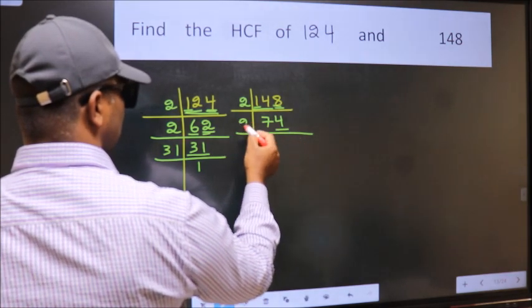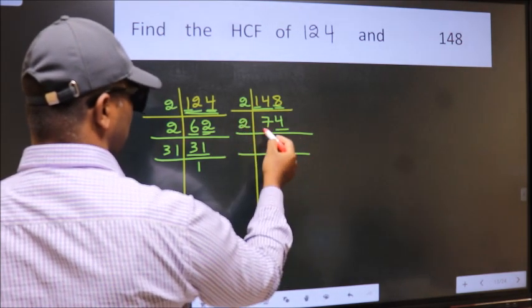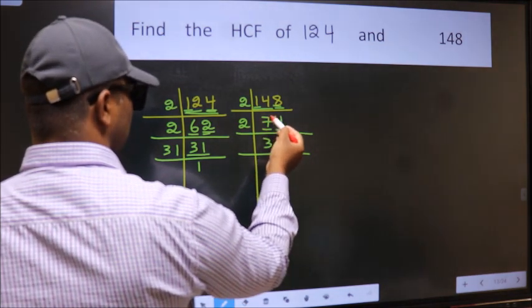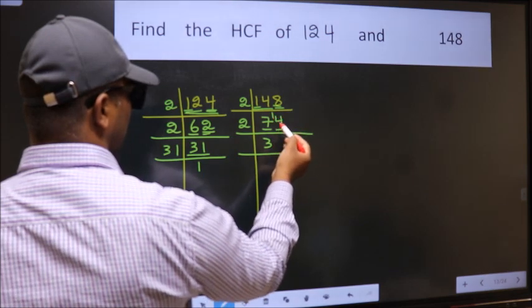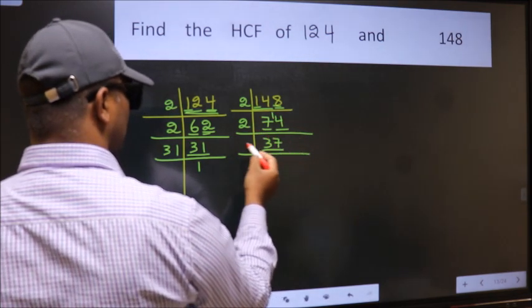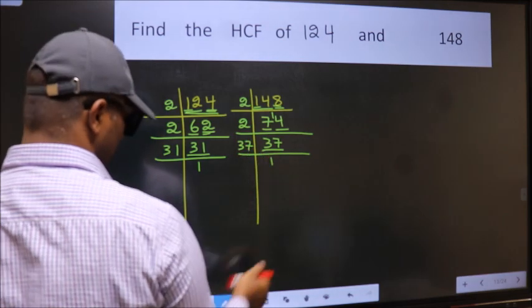Last digit 4 is even, so take 2. First number 7, a number close to 7 in 2 table is 2 times 3 is 6. 7 minus 6 is 1, 1 carried forward makes 14. When do we get 14 in 2 table? 2 times 7 is 14. 37 is a prime number, so 37 times 1 is 37.